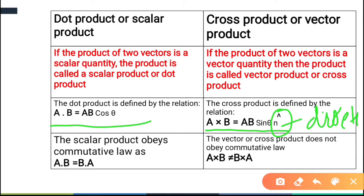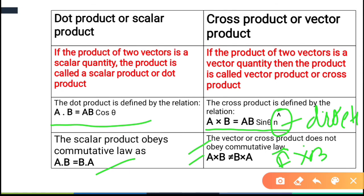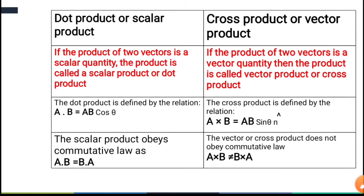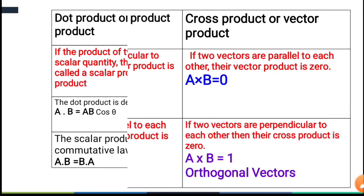Next, for the scalar product, the commutative law holds: A·B = B·A, because the direction does not change. However, the cross product is not commutative. A×B is never equal to B×A. Instead, A vector cross B vector equals minus of B cross A.